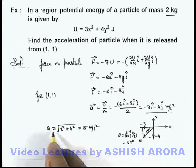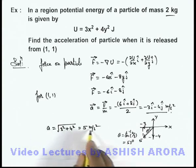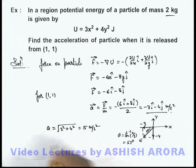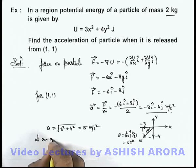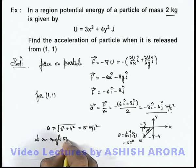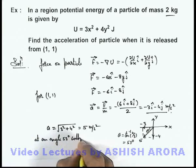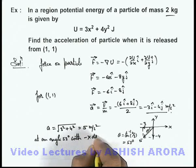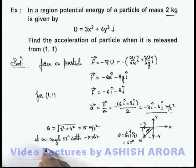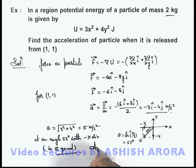So here we can write the acceleration of particle is 5 meters per second squared at an angle 53 degrees with minus x direction, so it will be located in third quadrant of the coordinate system. That will be the answer to this problem.